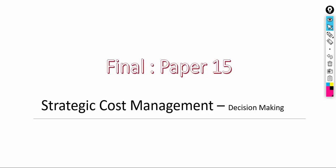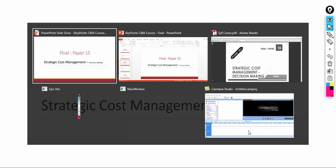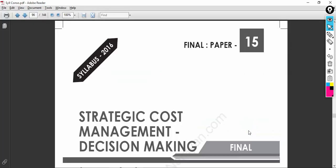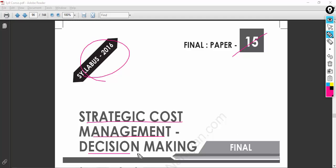Having said that, we'll go to Paper 15, as already mentioned — a very interesting subject, similar to Paper 14. Now we have Paper 15, another practical subject for decision-making purposes. Let's try to get some analysis on how you can plan based on your strengths and weaknesses. Paper 15, as per the 2016 syllabus, is Strategic Cost Management for Decision-Making.